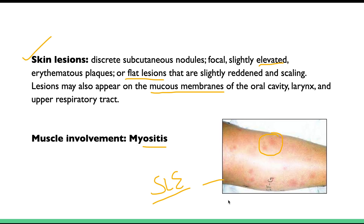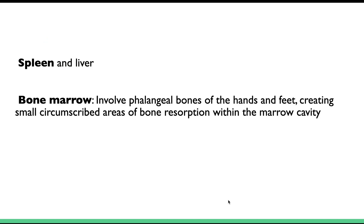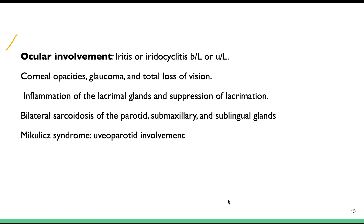The symptoms depend on the organ involved. The spleen, liver, and bone marrow can also be involved; in the bone marrow, there are areas of bone resorption. Ocular involvement is very characteristic, with uveitis or iridocyclitis being a hallmark of sarcoidosis.